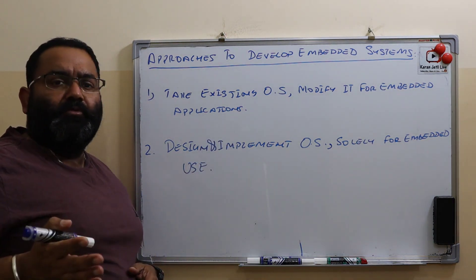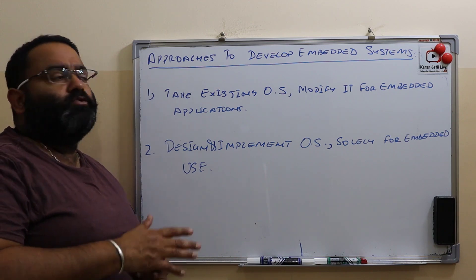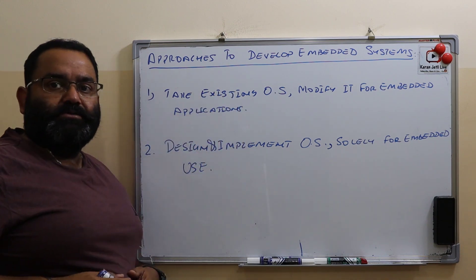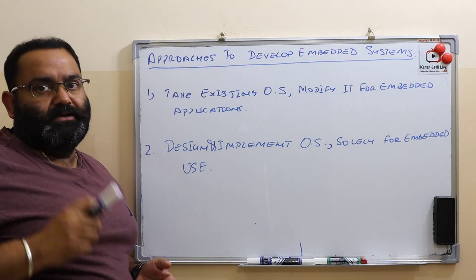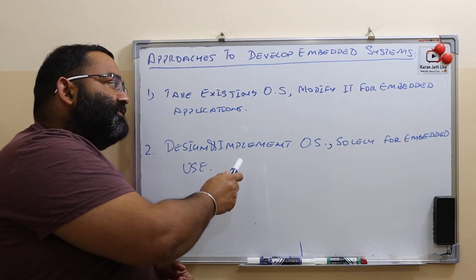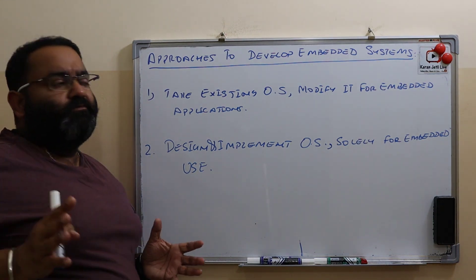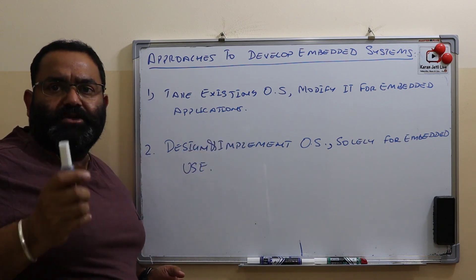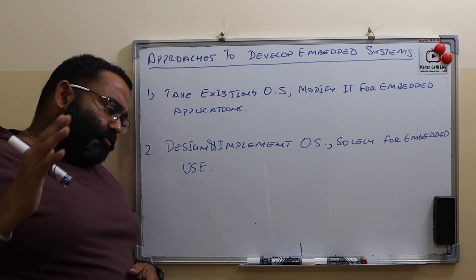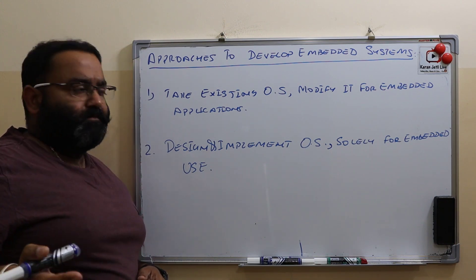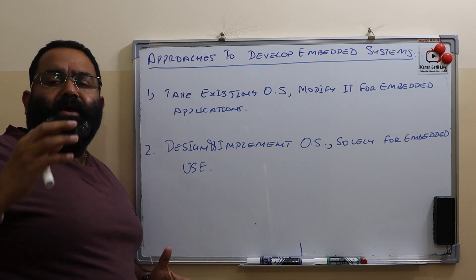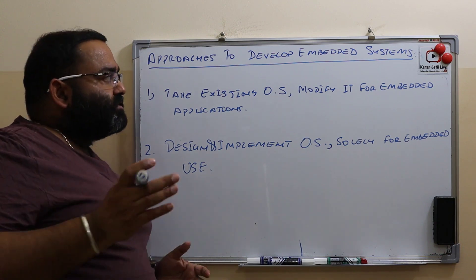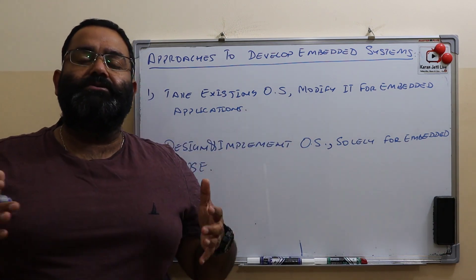There are two approaches to develop an embedded system. The first approach is to take an existing operating system and modify it to be used as an embedded system. The second approach is to design and implement an operating system which is solely used as an embedded system. So either we take an existing operating system and make modifications to it, or we make a dedicated embedded system for some application.